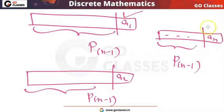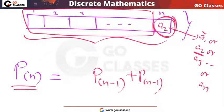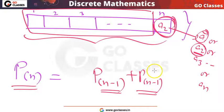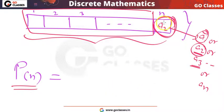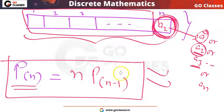So if I put any element in the last position, I am getting P(n-1) permutations. Because we have n choices for the last position — we can put either a1, a2, a3, or an — we have total n choices. So we will get n × P(n-1). This is the recurrence relation: Pn = n × P(n-1).